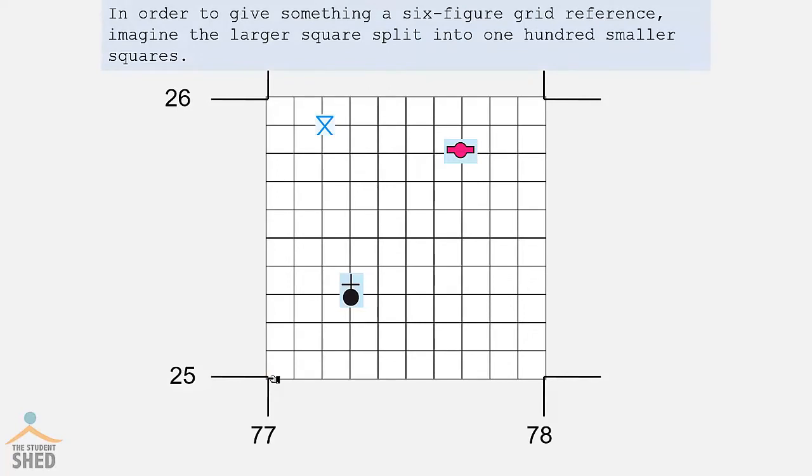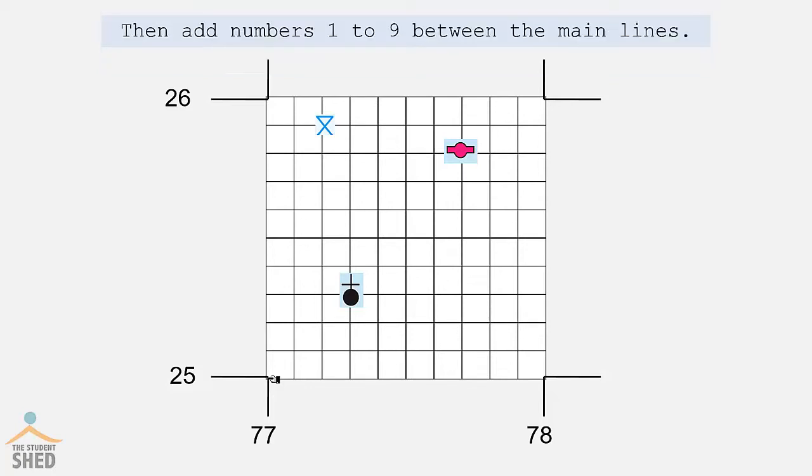In order to give something a six-figure grid reference, let's imagine the largest square split into 100 smaller squares. Then add numbers one to nine between the main lines.